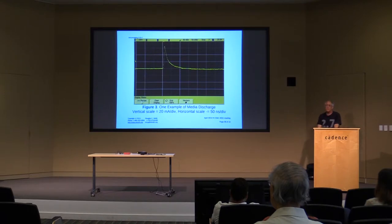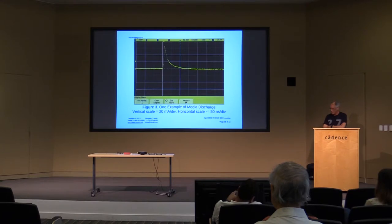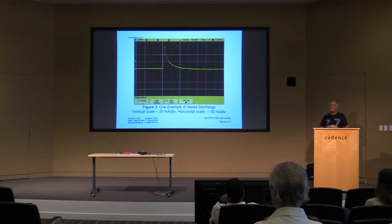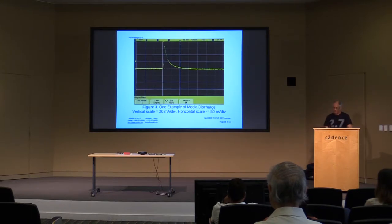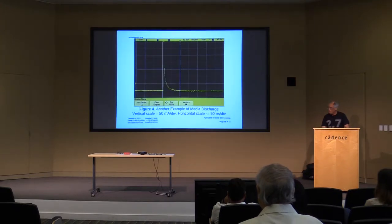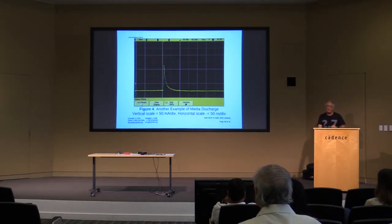The measured waveform was about 60 milliamps. To give perspective, typical ESD testing for European norms might be 12 amps — this is 60 milliamps, a tiny event. The time scale was fairly short, maybe 20-30 nanoseconds because it was a small thing. There was another measurement at about 200 milliamps — still tiny compared to standard ESD testing.